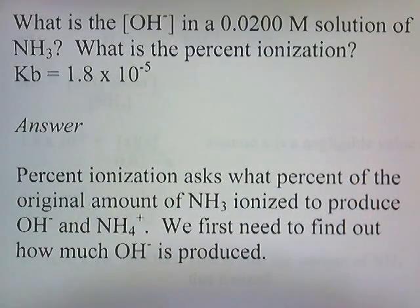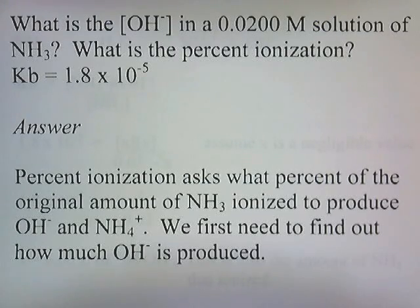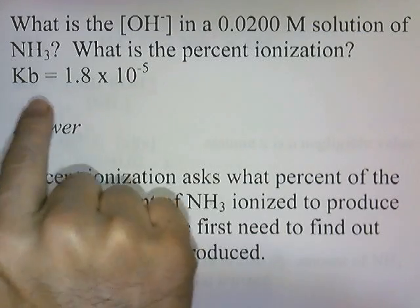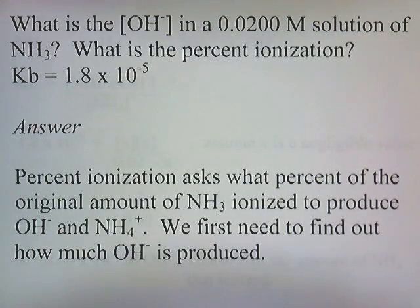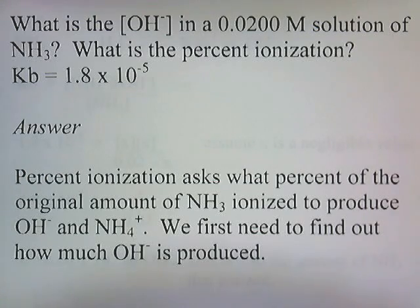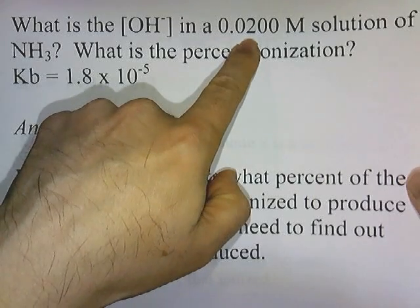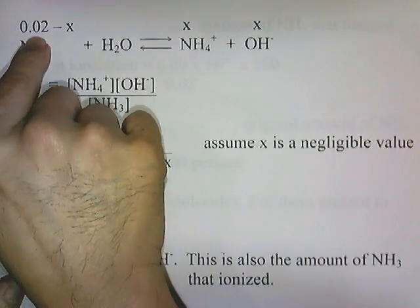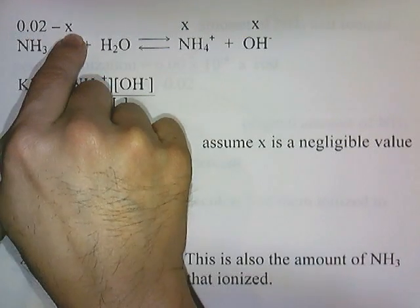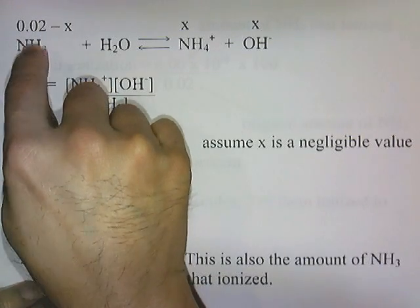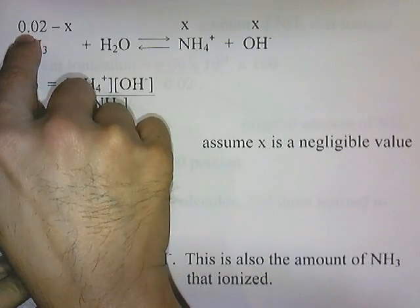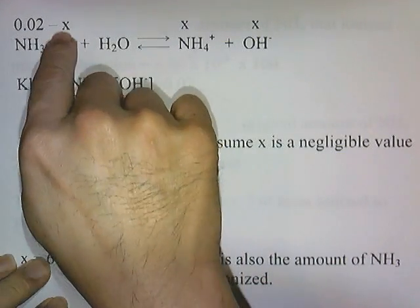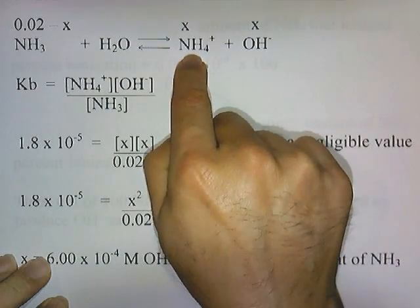Let's try another problem: What is the concentration of hydroxide in a 0.02 molar solution of ammonia? What's the percent ionization? We're given that the KB value is 1.8 times 10 to the negative fifth. Percent ionization asks what percent of the original amount of ammonia ionized to produce hydroxide and ammonium, so we first need to find out how much hydroxide is produced. Here's the reaction: ammonia reacts with water to produce ammonium and hydroxide. We started with 0.02 molar; x amount reacts, leaving 0.02 minus x, and producing x amount of ammonium and x amount of hydroxide.